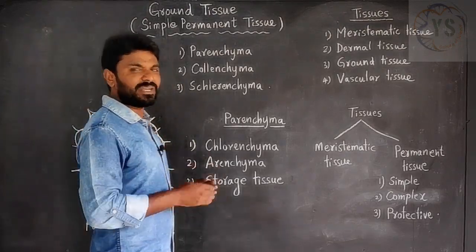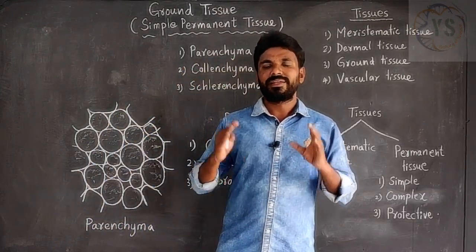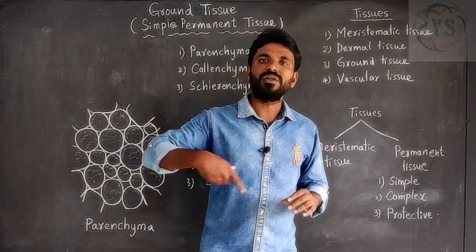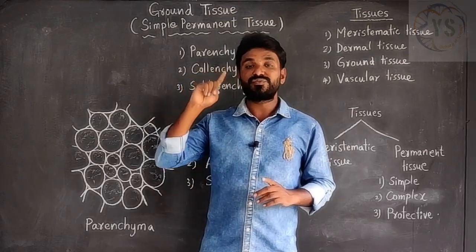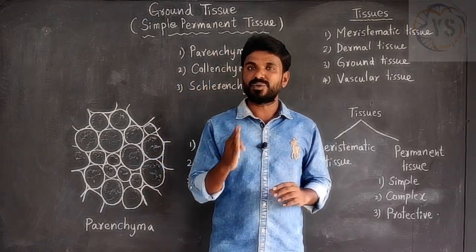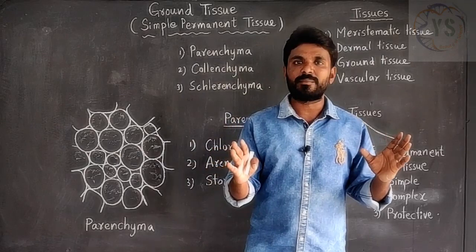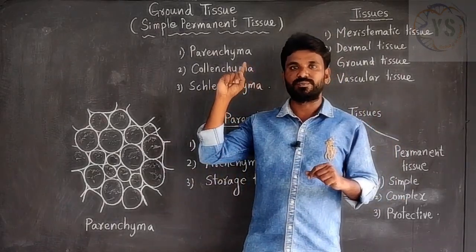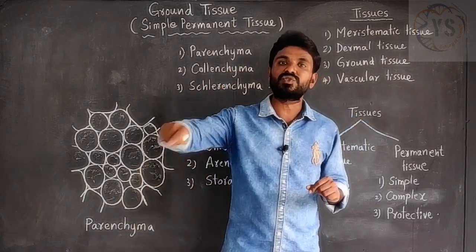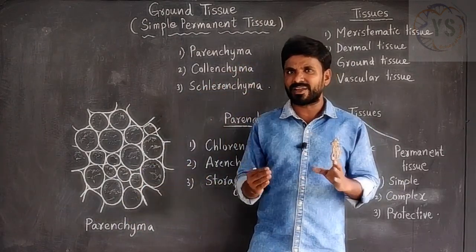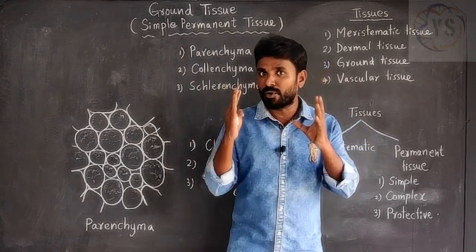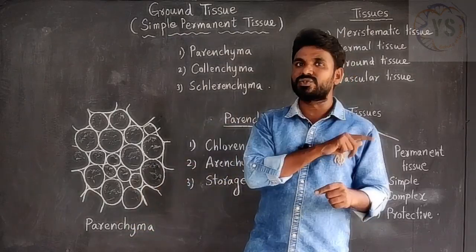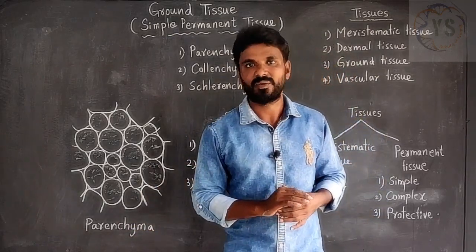What is ground tissue or simple permanent tissue? It is a tissue responsible for packaging all the tissues in the plant body, and it forms the bulk of the plant body. Ground tissue occupies a major portion of the plant body, and because it occupies so much space, it can surround and cover all the tissues, helping in the packaging of all the tissues.